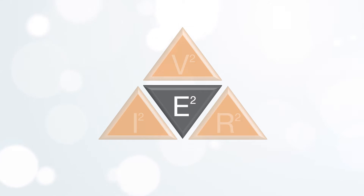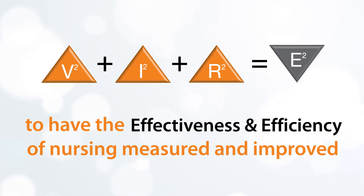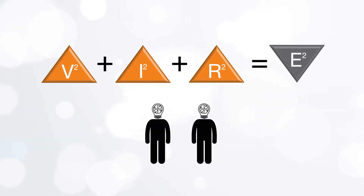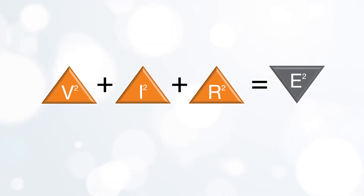eSquare in turn signifies both the result and the objective of the research: to have the effectiveness and efficiency of nursing measured and improved. The square signs indicate that knowledge gets multiplied within a domain, and the plus signs indicate that the three domains are linked.